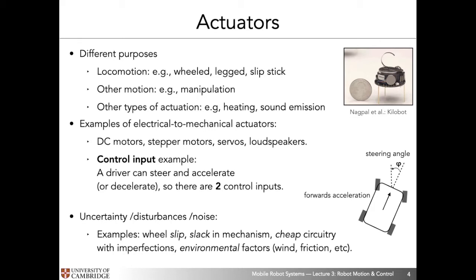Examples of electrical-to-mechanical actuators include DC motors, stepper motors, servos, and loudspeakers. In this course, you will focus mainly on DC motors and stepper motors, since those are the most common ways of actuating wheels. A very key concept in terms of actuation is what control inputs we have to give a robot in order for it to actuate its various actuators to create the desired motion.